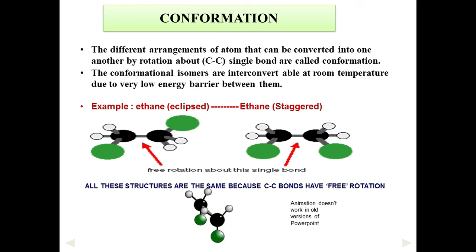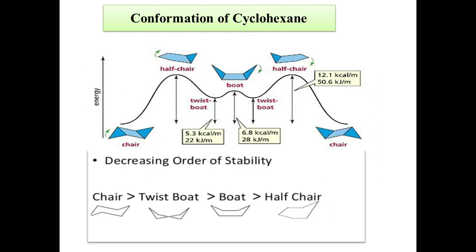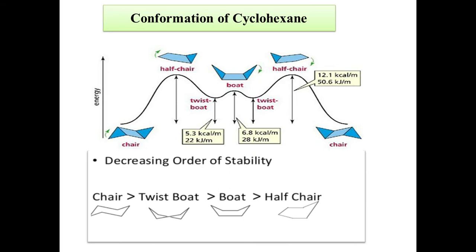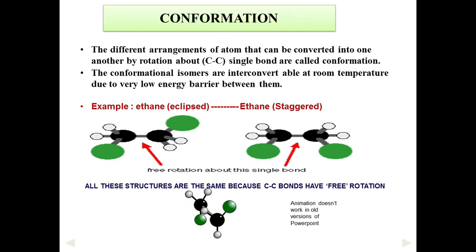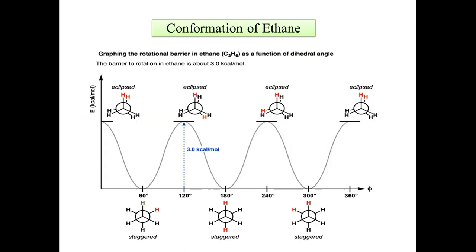Conformational isomerism: free rotation around a carbon-carbon single bond produces conformational isomers. These interconvert at room temperature because of a very low energy barrier between them and cannot easily be separated. For ethane, the eclipsed and staggered conformations arise from this free rotation. In contrast, restricted rotation around a carbon-carbon double bond gives rise to geometrical isomerism.